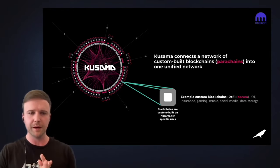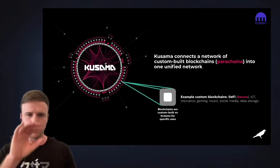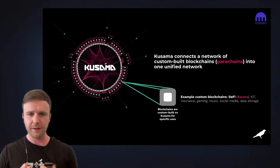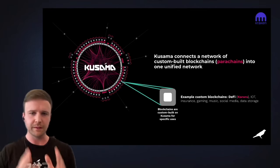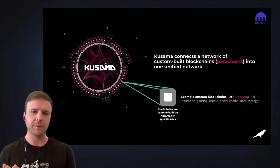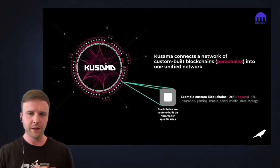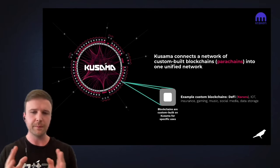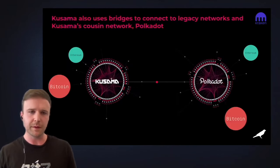Zooming in on one of these blockchains — which we call parachains — you can see that Kusama is connecting this whole ecosystem of blockchains together. These blockchains are customized for specific purposes, including DeFi, gaming, and social media. Acala's Kusama implementation, called Karura, is an example of one of the early blockchains launching to fill the needs of the DeFi use case within the Kusama community.